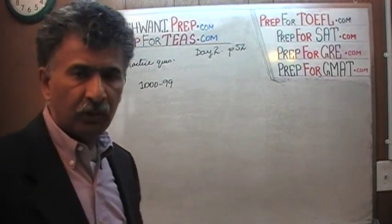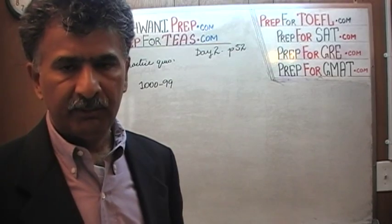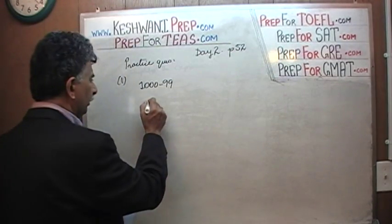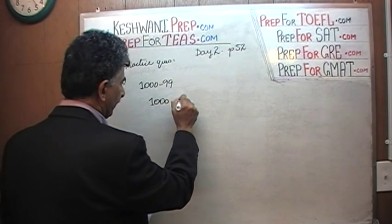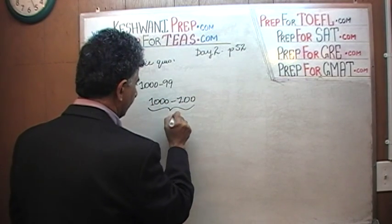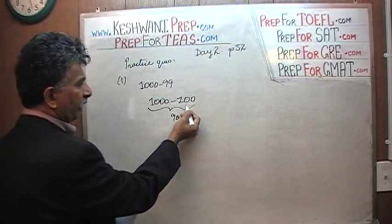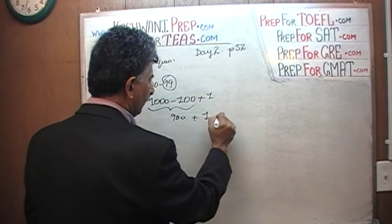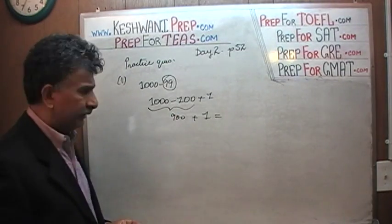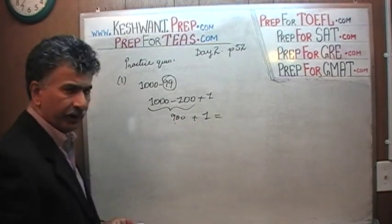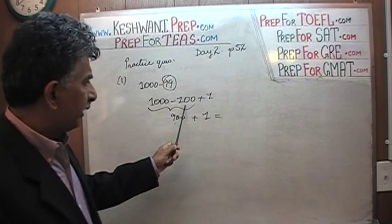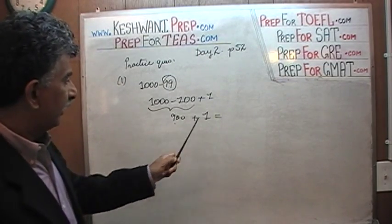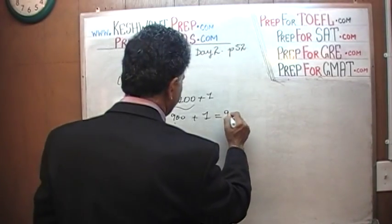We do not have to solve every single problem in an academic way, even though it is simple and there is no need to make a fuss. But there is a quicker way. We know 1000 minus 100 is 900. We are supposed to subtract 99, not 100 — so just add 1 back. Subtract 100, get 900, then add 1. We are essentially subtracting 99. So the answer is 901.